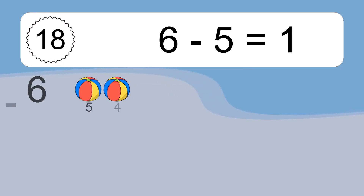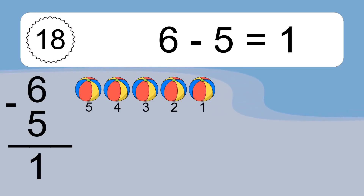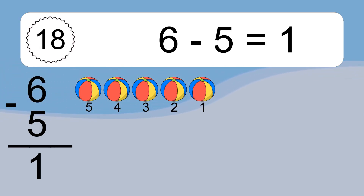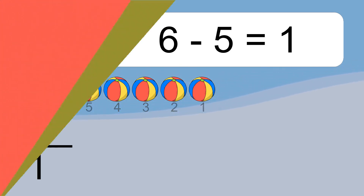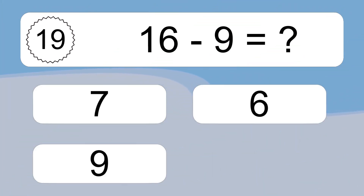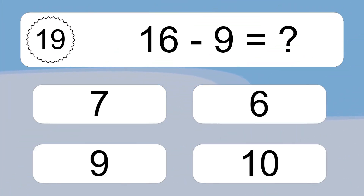6 minus 5 equals what? 6 minus 5 equals 1. Let's count it: 5, 4, 3, 2, 1.